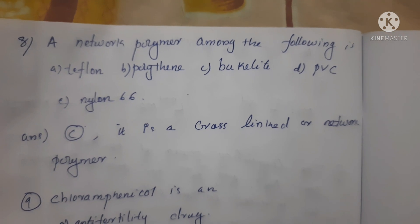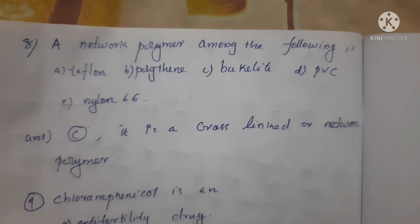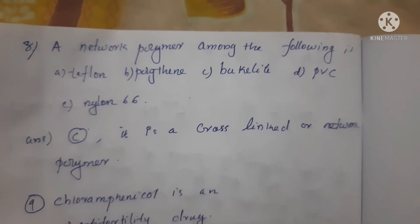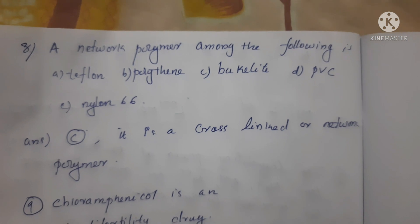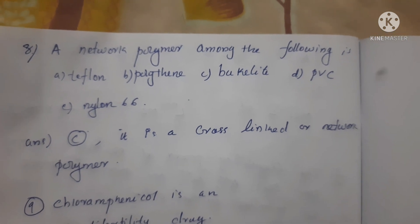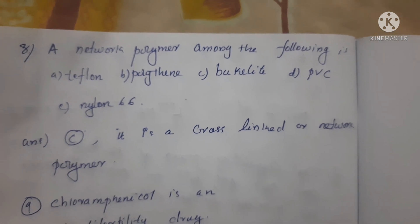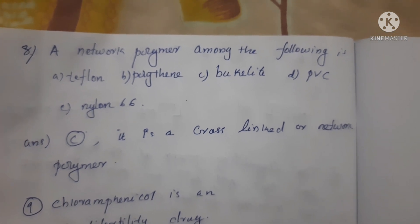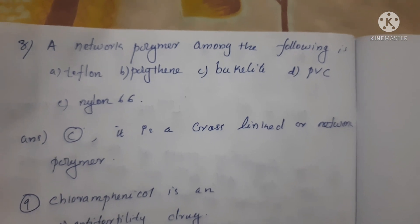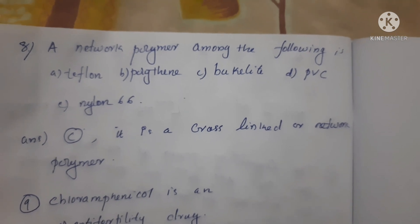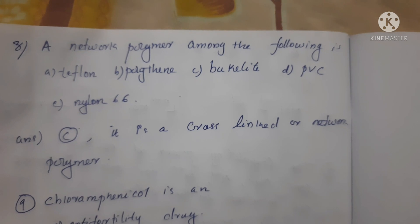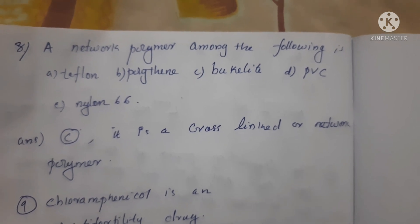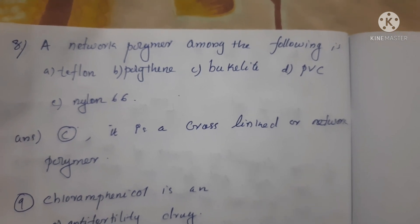Next question: which of the following is a network polymer? Option A teflon, Option B polythene, Option C bakelite, Option D PVC, Option E nylon 6-6. Correct answer is Option C, bakelite. It is a cross-linked or network polymer.